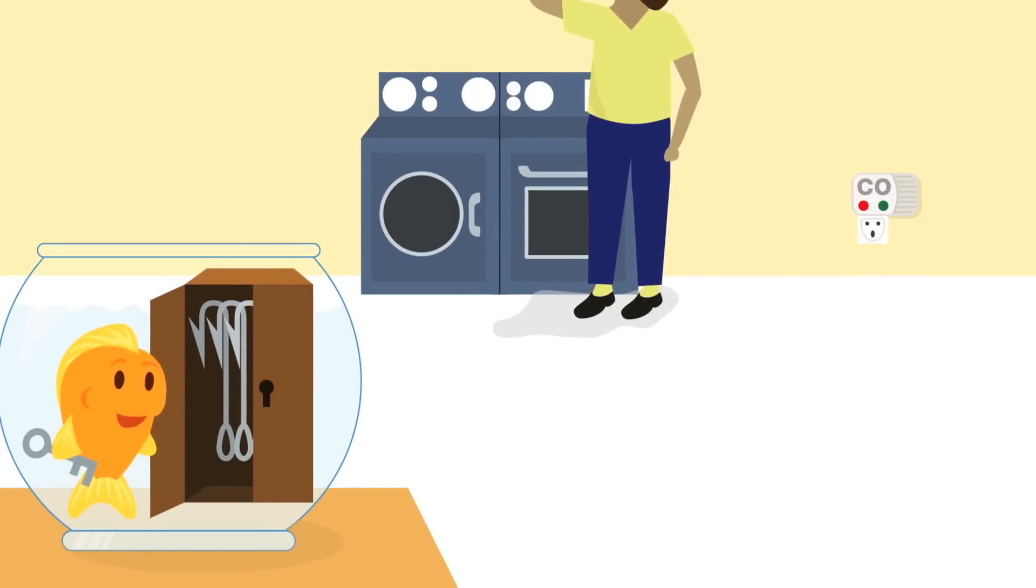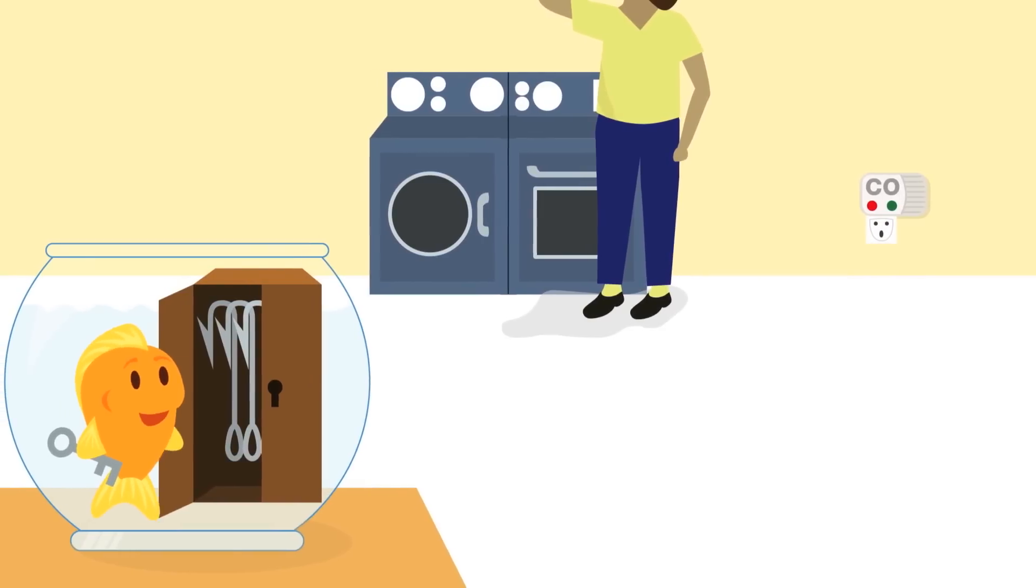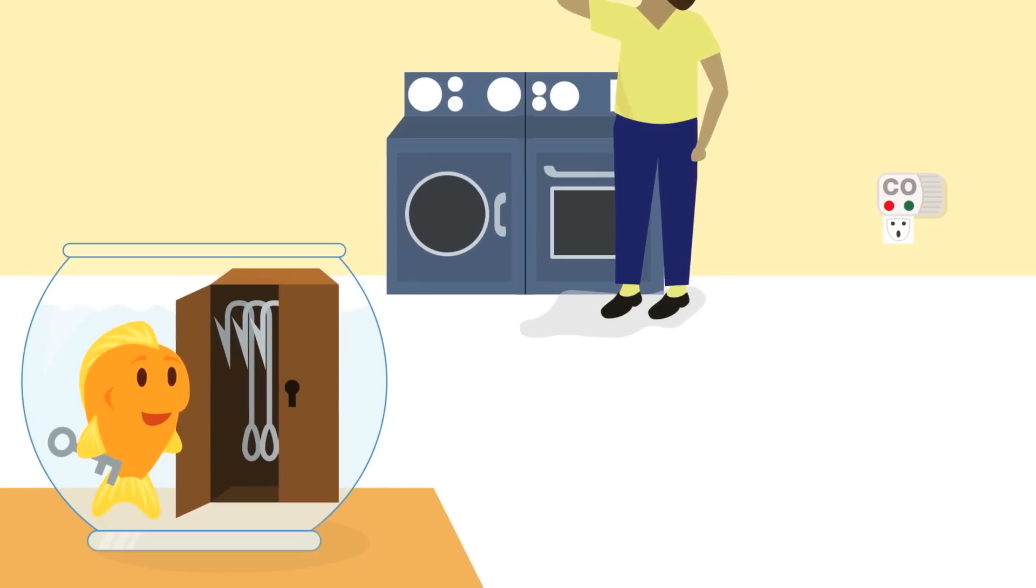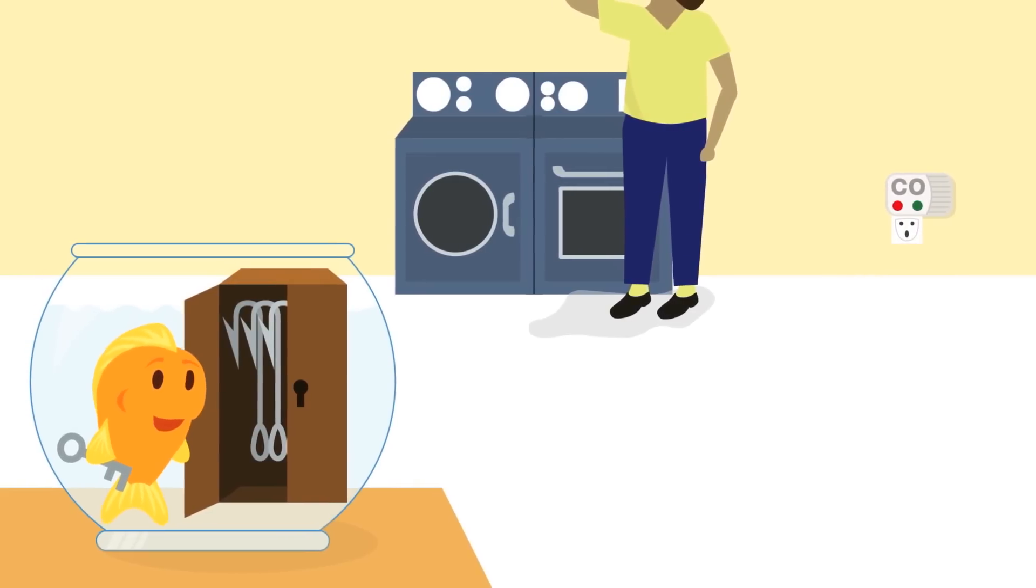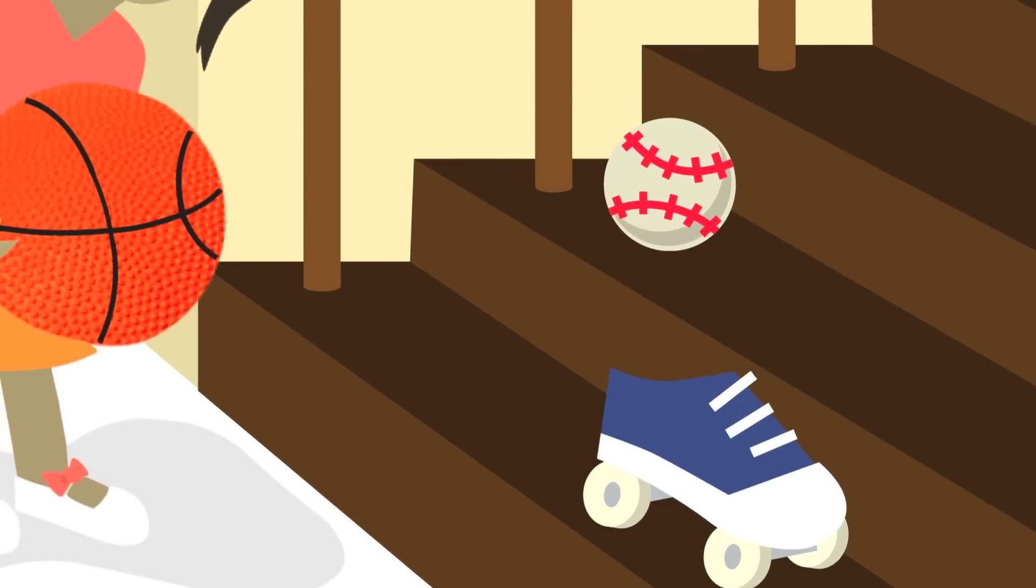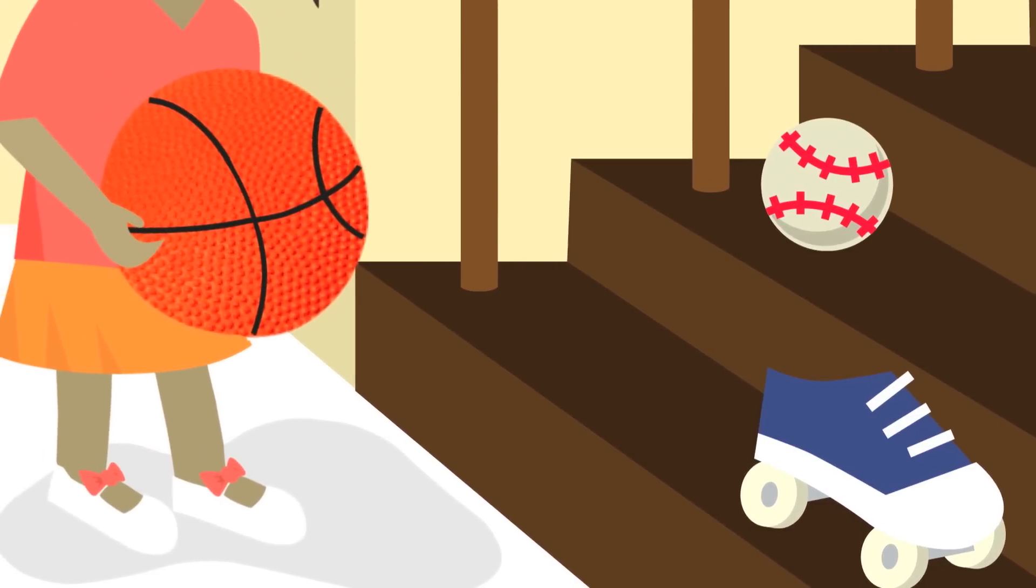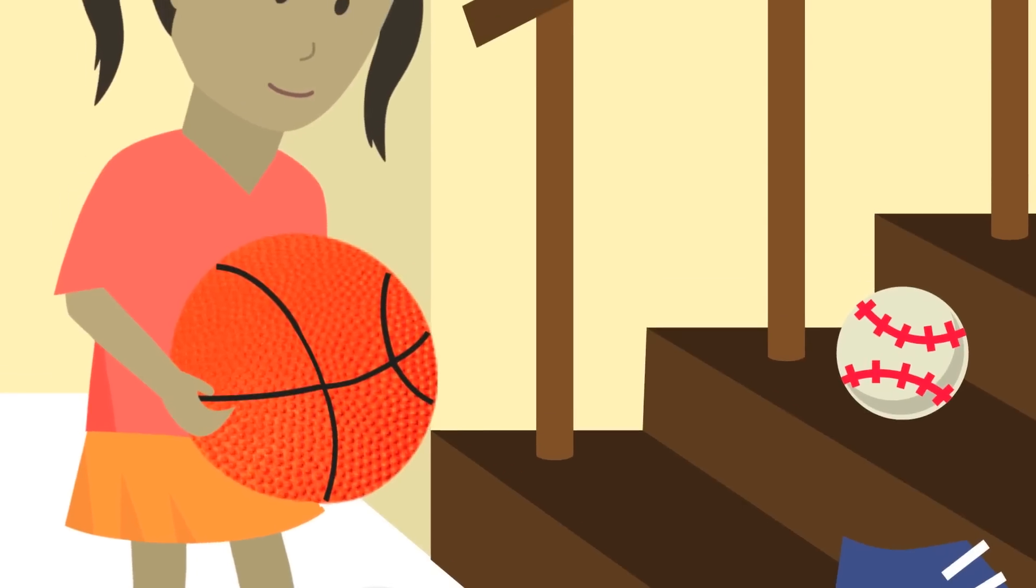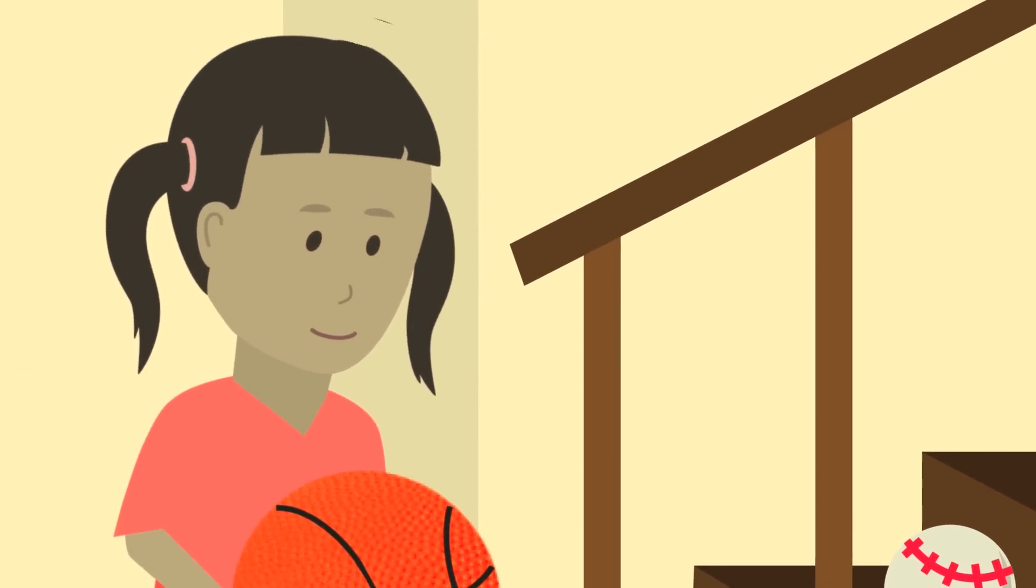If you see dangerous things like pills, bug spray, or bleach, ask a grown-up to move them from out of kids' reach. To stop slips, trips, and falls when stuff's lying around, pick it up, put away, move it off of the ground.